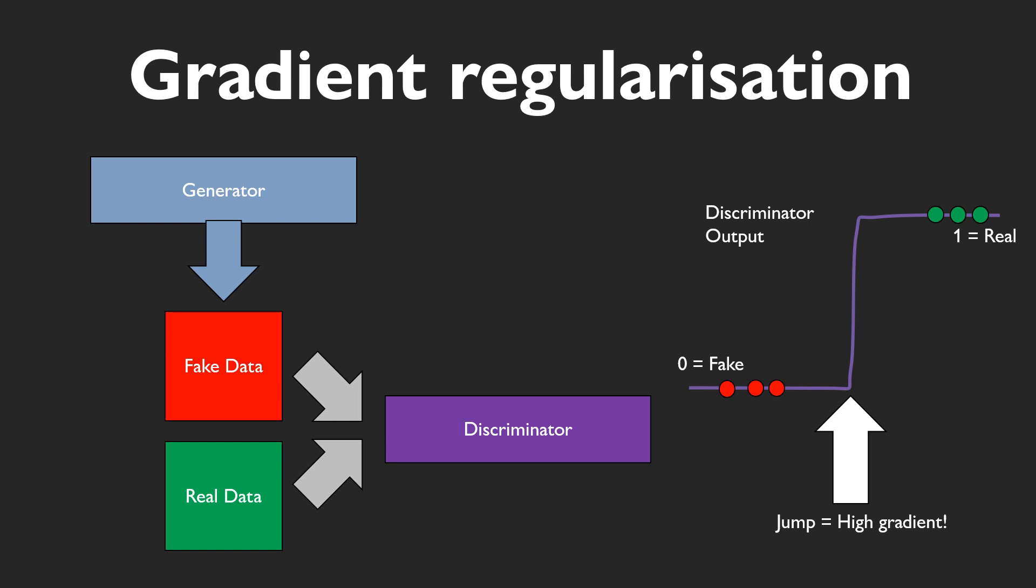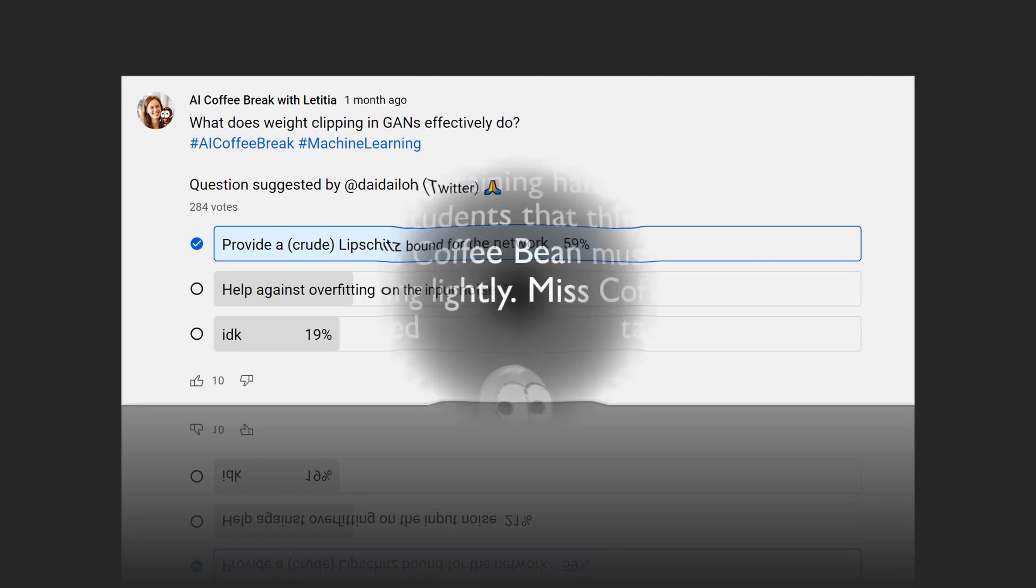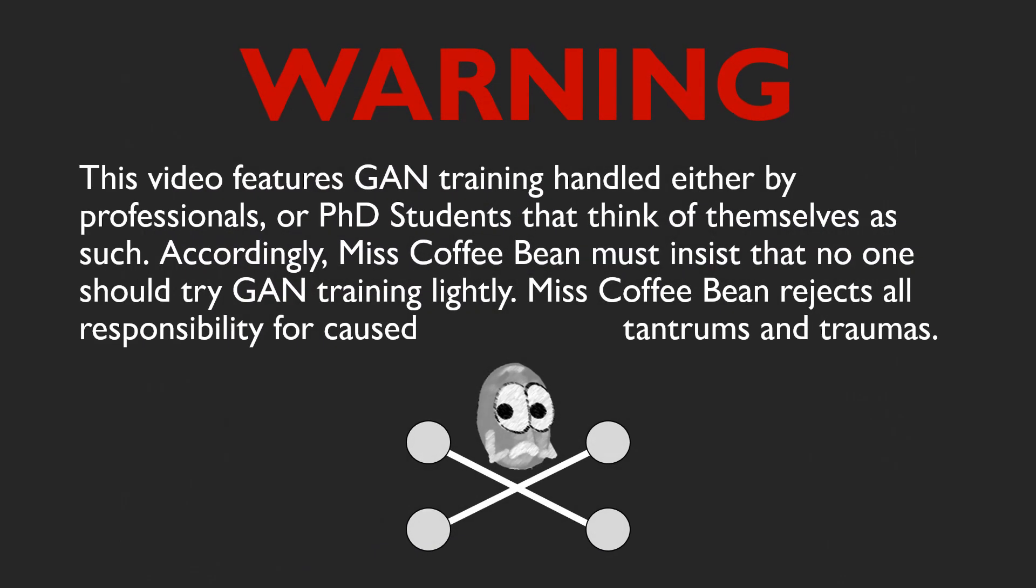So, what do you do about that? Well, you don't want these jumps in your loss function. You want your loss function to smoothly change with a limited rate of change, which is exactly what a Lipschitz bound for your network does. So, for example, you enforce Lipschitz continuity through weight clipping. And boom, things get better. Mostly. Sometimes. GANs are lots of fun.